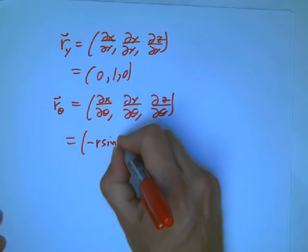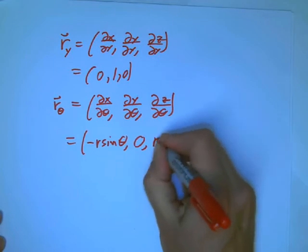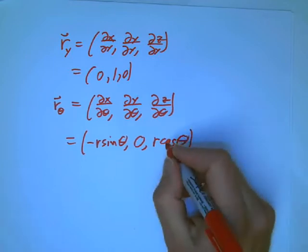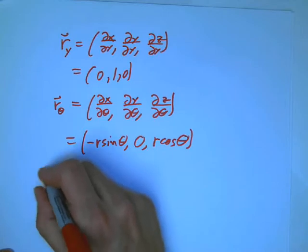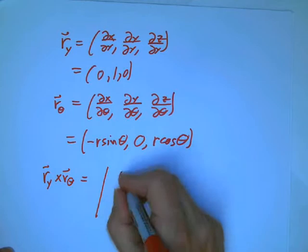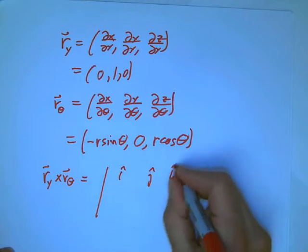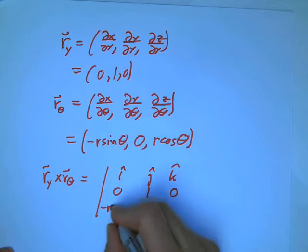r sub theta, dx d theta, dy d theta, dz d theta. That's pretty much like the usual polar story. That's going to be minus r sine theta, 0, r cosine theta.